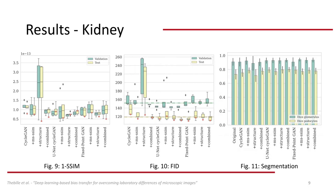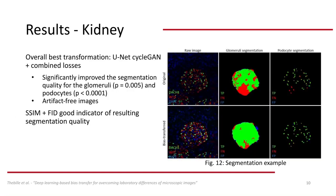Here you can see a visualization of the results for the kidney biopsies. Overall, the UnitCycleGAN variations performed the best regarding SSIM and FID scores, and they also led to the best segmentation scores. UnitCycleGAN trained with the combined losses led to the best overall results. It significantly improved the segmentation quality for the glomeruli and podocytes without adding hallucination artifacts to the images. Additionally, SSIM and FID were good indicators here for the resulting segmentation quality.